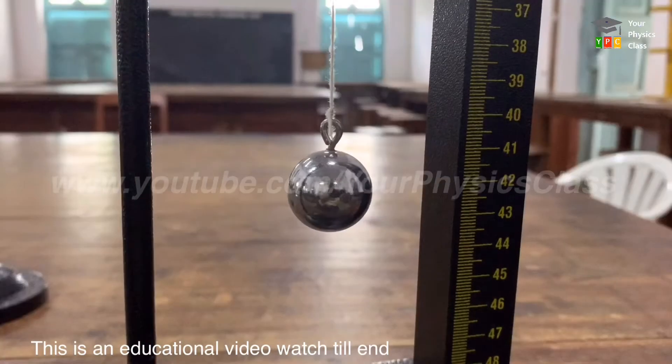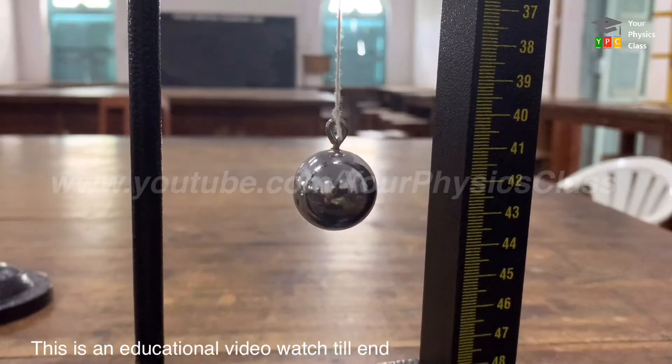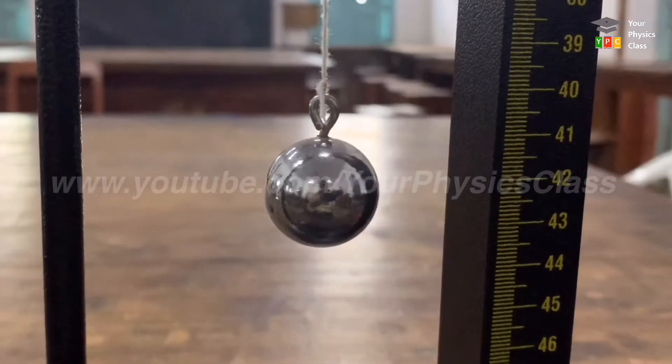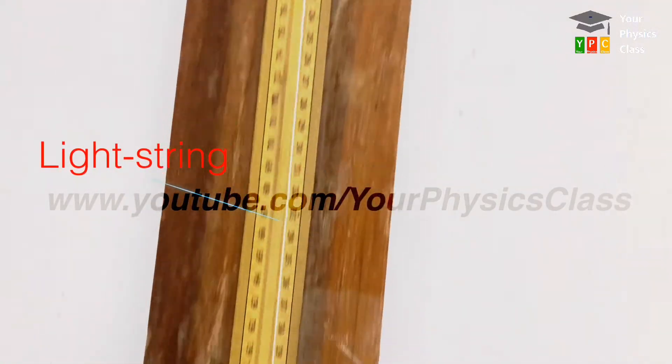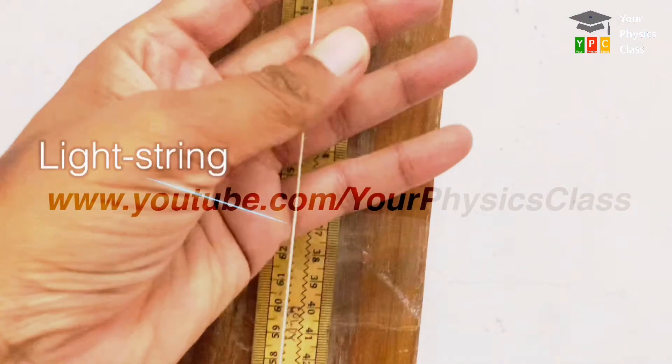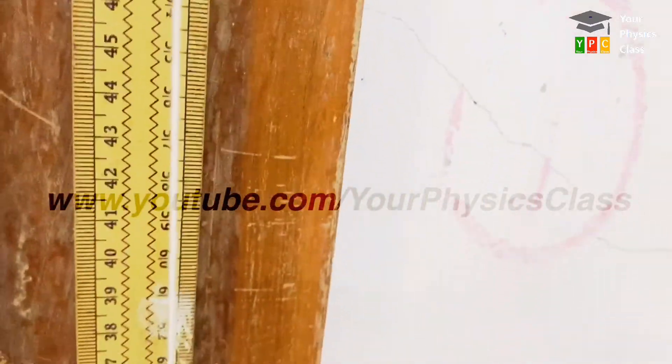In order to have its practical application, we will replace heavy particle by heavy dense sphere called bob and instead of massless string, we take light string with negligible mass. So friends, this is a practical simple pendulum.